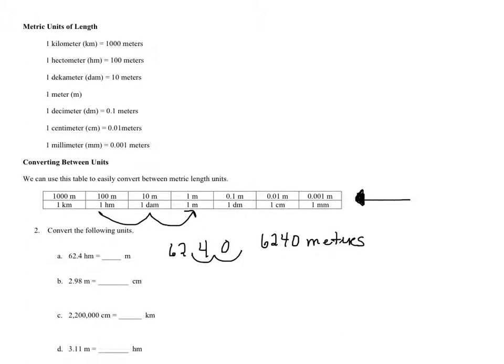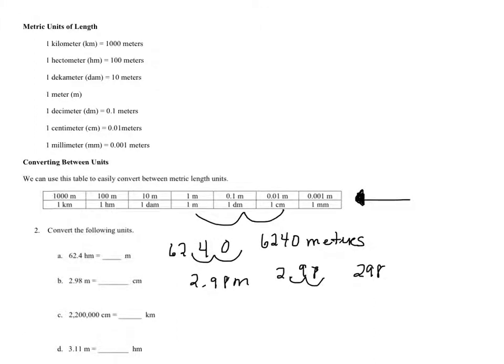Let's do the next one. 2.98 meters, and we're going to go to centimeters. So I'm going to just erase this piece, so that you have it. And we're starting at meters, and we're going to centimeters. So we're going to start here and move over two. So we're going to go two to the right. So 298, I have to move it two to the right, so I will get 298 centimeters.